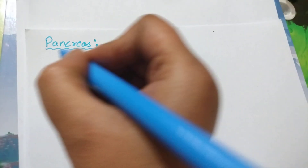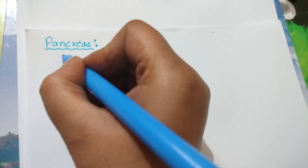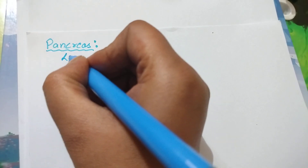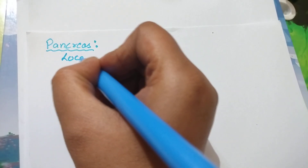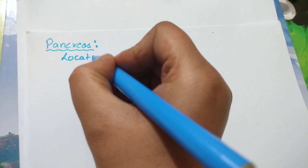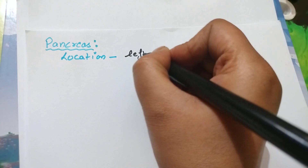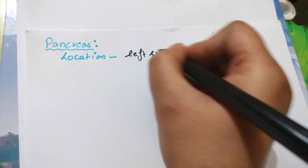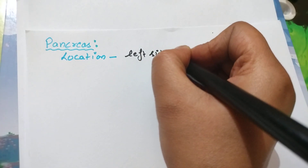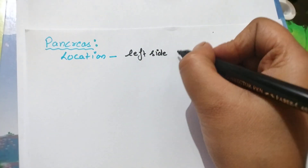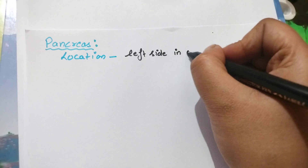First, let us talk about its location. Now where is this pancreas located in the human body? It is present in the left side in the abdominal cavity.